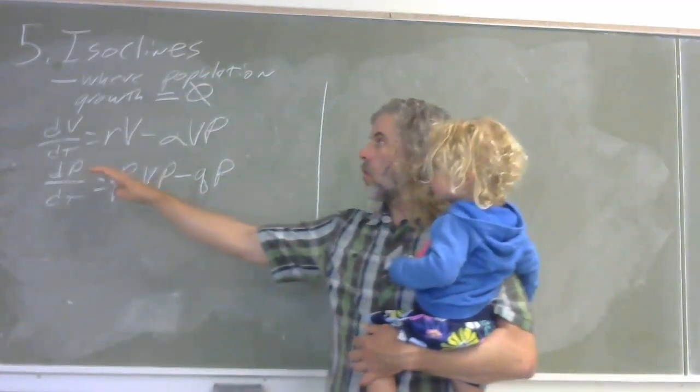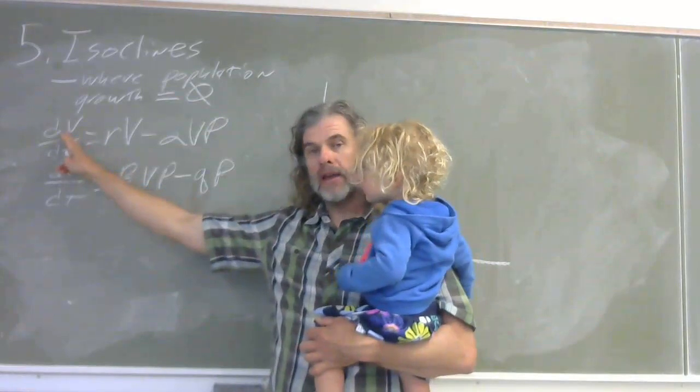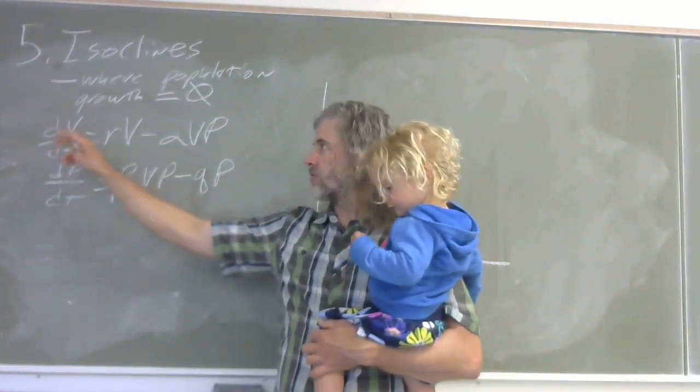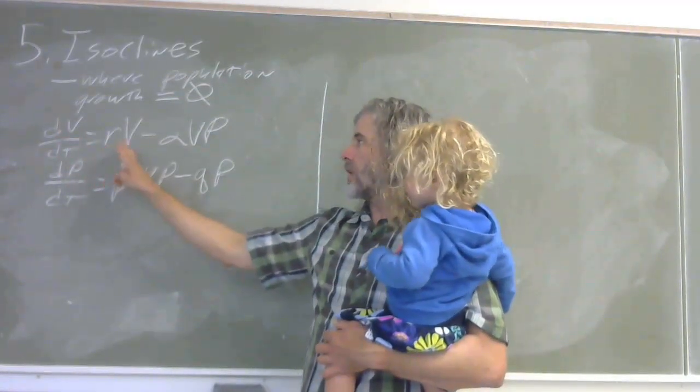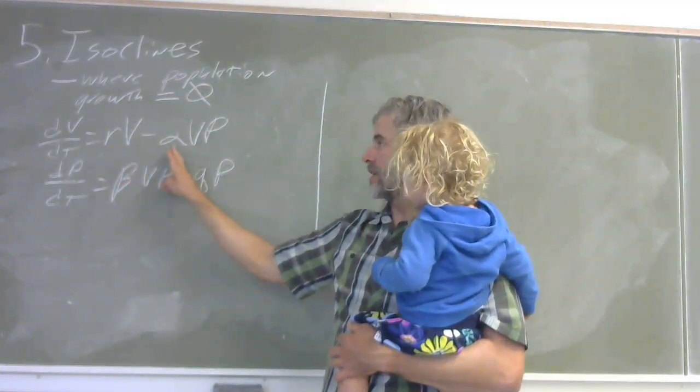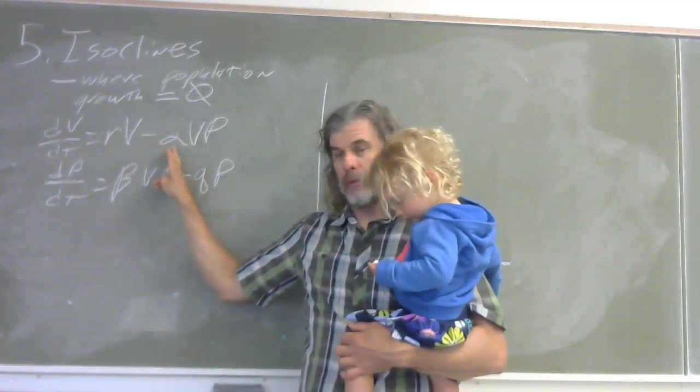So if you recall our system of equations, we've got one for the prey. This is denoted by V for victims. It's got the growth rate of the victims minus the number that are eaten by predators.